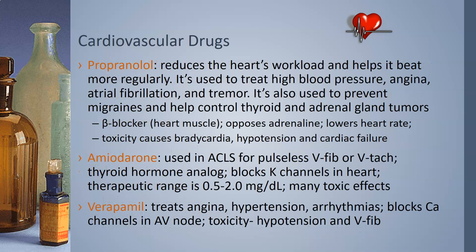Propranolol reduces the heart's workload and helps it beat more regularly. It is used to treat high blood pressure, atrial fibrillation, and tremors, and is also used to prevent migraines and help control thyroid and adrenal gland tumors. It is a beta blocker that works in the heart muscle, opposing adrenaline and thereby lowering the heart rate. Toxicity will cause bradycardia, hypotension, and cardiac failure. It is not often monitored or ordered.